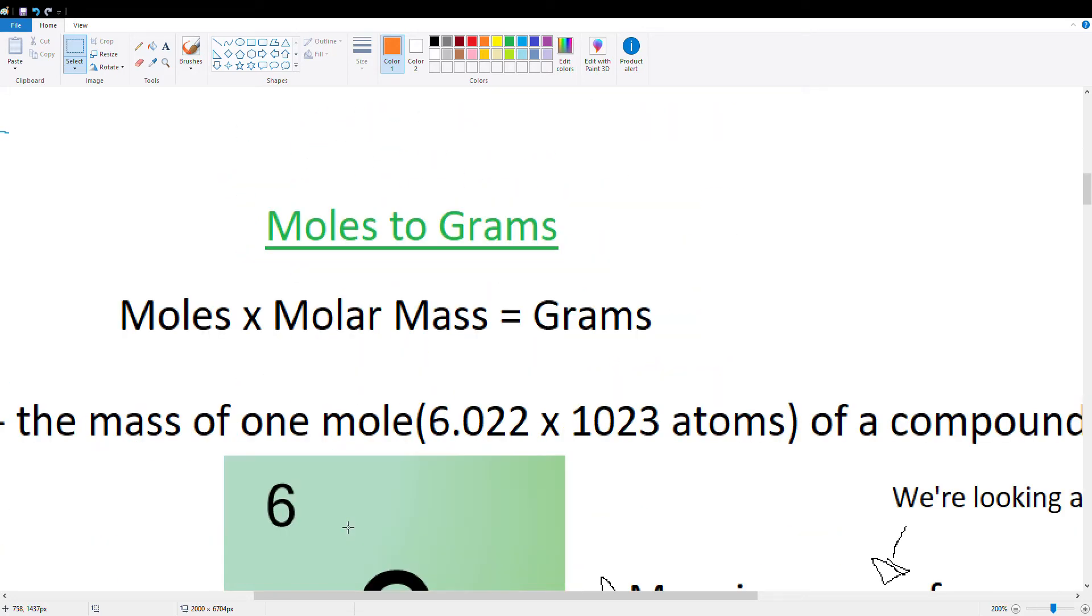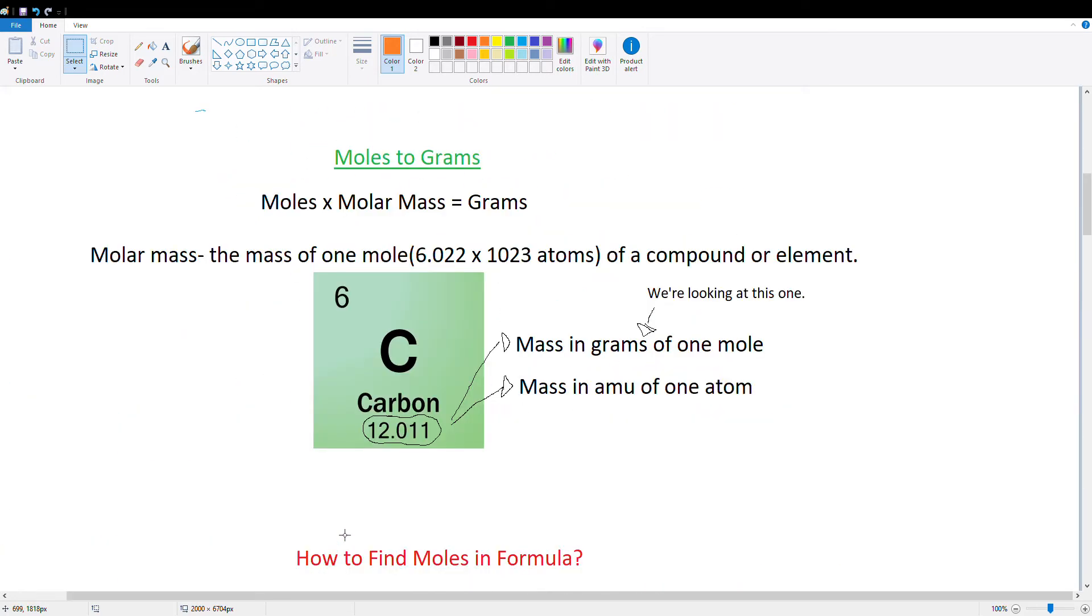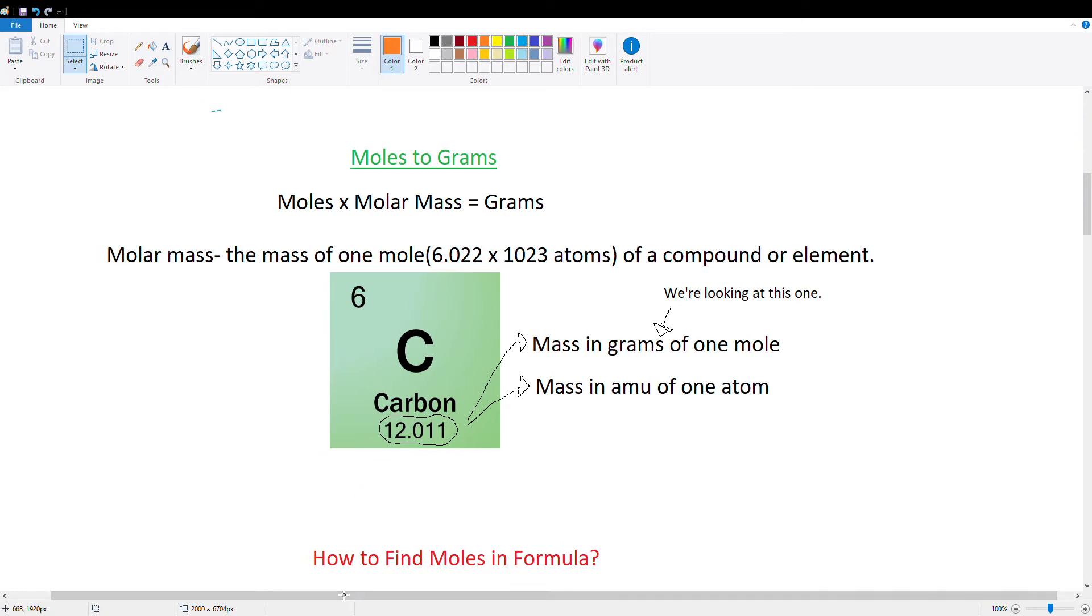So let's start with moles to grams. To get from moles to grams, we have to multiply the moles by the molar mass. The molar mass is the mass of one mole, which is 6.022 times 10 to the 23rd atoms, as we learned in the previous video.